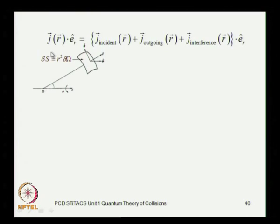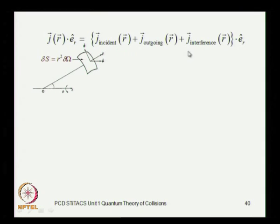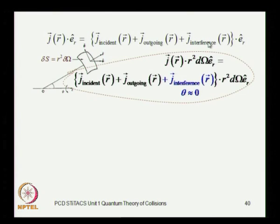This is the complete expression for the radial component of the current density vector — all three contributors are here: the incident beam, the outgoing scattered beam, and the interference term.